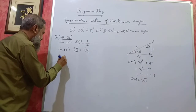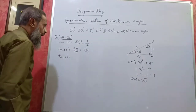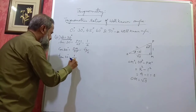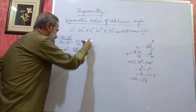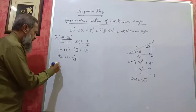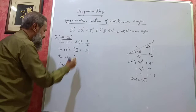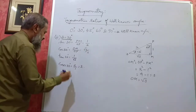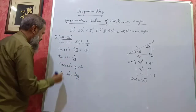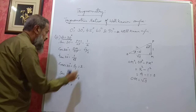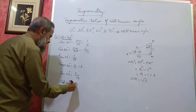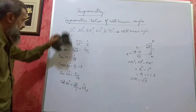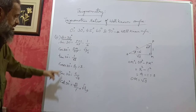Tan 30° is opposite by adjacent, or sin 30° by cos 30°. The 2s cancel, giving 1 by √3. Cosecant 30° is 1 by sin 30° = 2 by 1 = 2. Secant 30° is 1 by cos 30° = 2 by √3. Cot 30° is cos 30° by sin 30° = (√3/2) ÷ (1/2) = √3. So the six values for 30° are: sin = ½, cos = √3/2, tan = 1/√3, cosec = 2, sec = 2/√3, cot = √3.